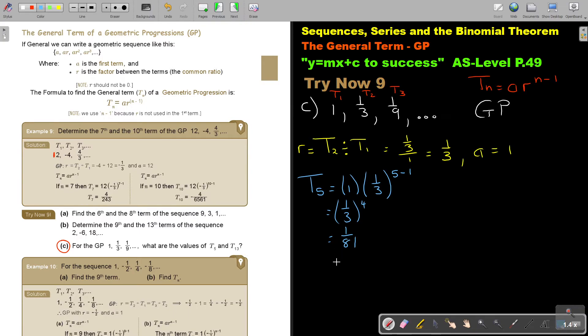And then T13, exactly the same, 1, but now it's 1/3, and it's 13 minus 1. So it's 1/3 to the power of 12.